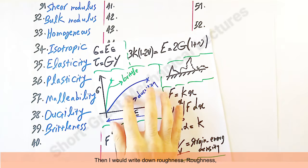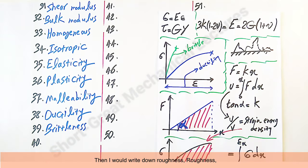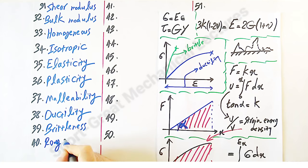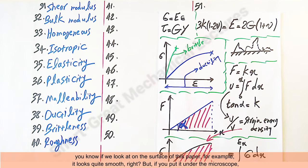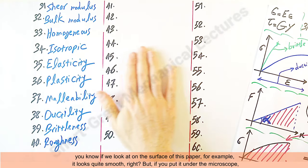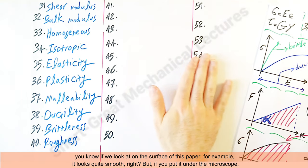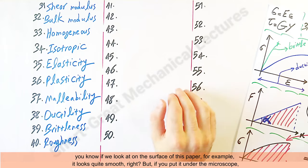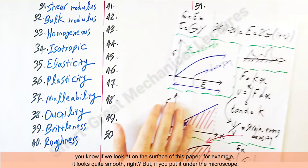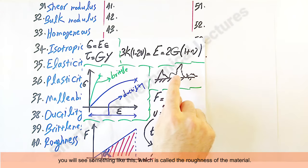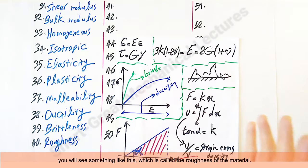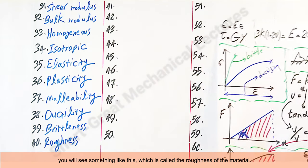Then I would write down roughness. You know, if we look at the surface of this paper, for example, it looks quite smooth, right? But if you put it under the microscope, you will see something like this, which is called the roughness of the material.